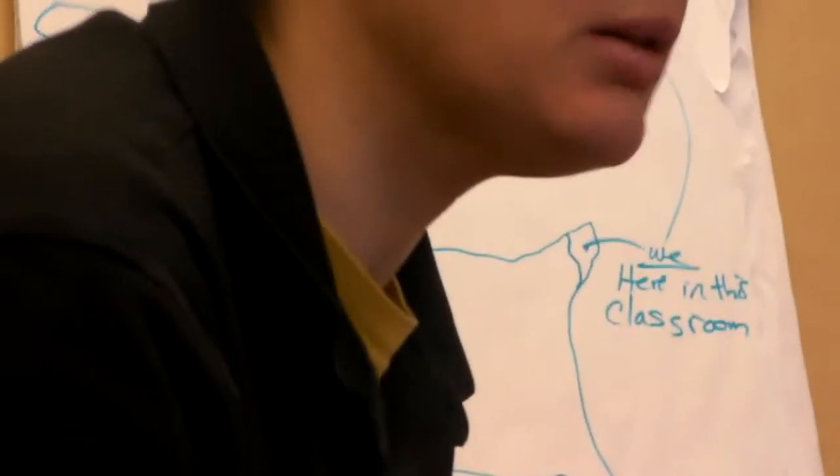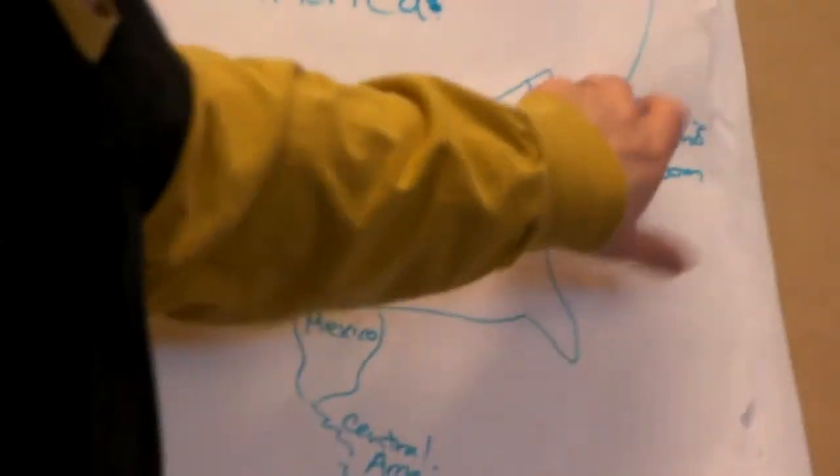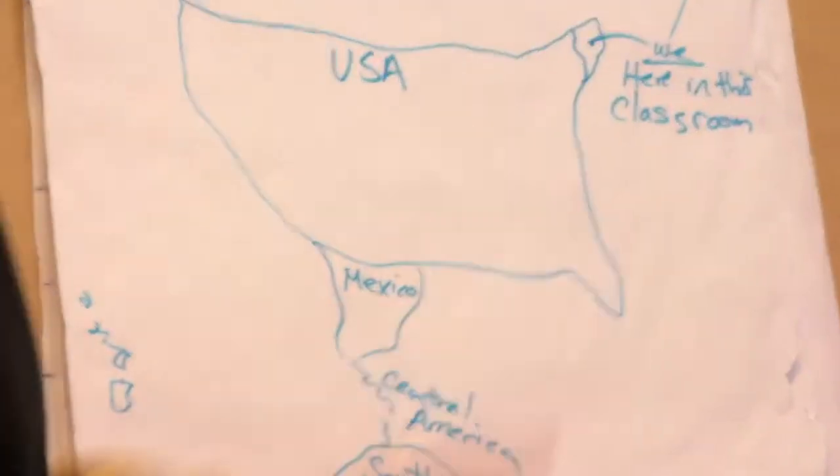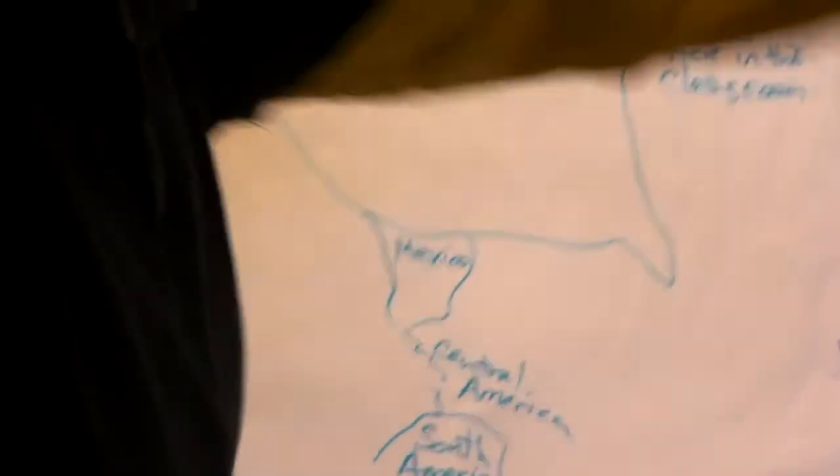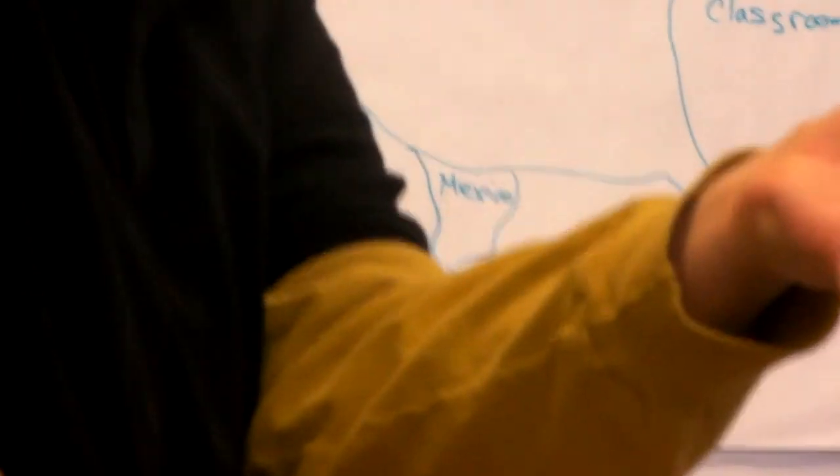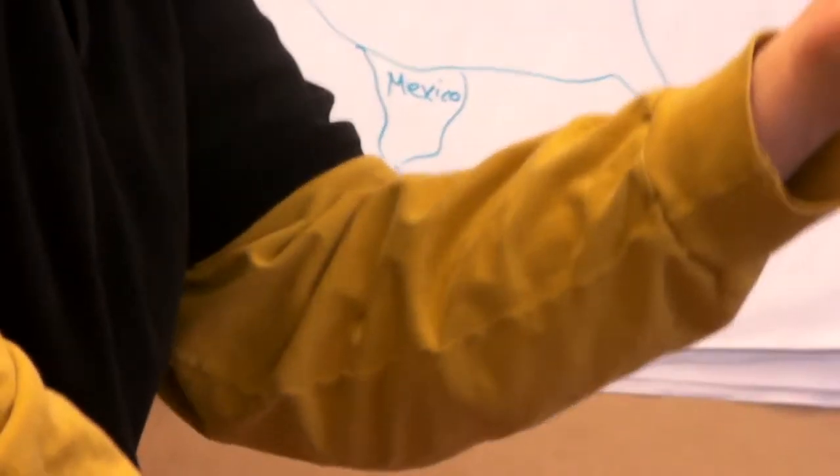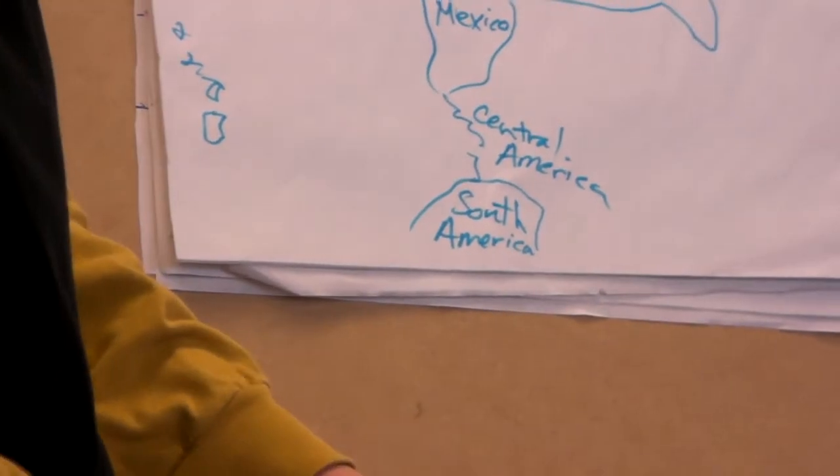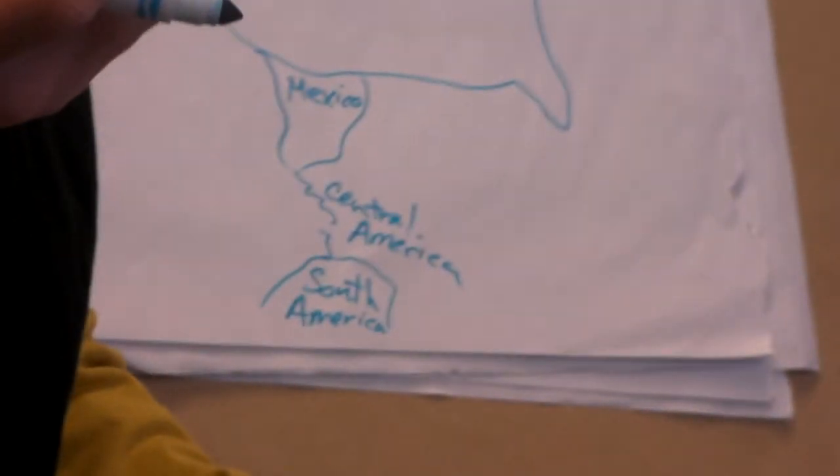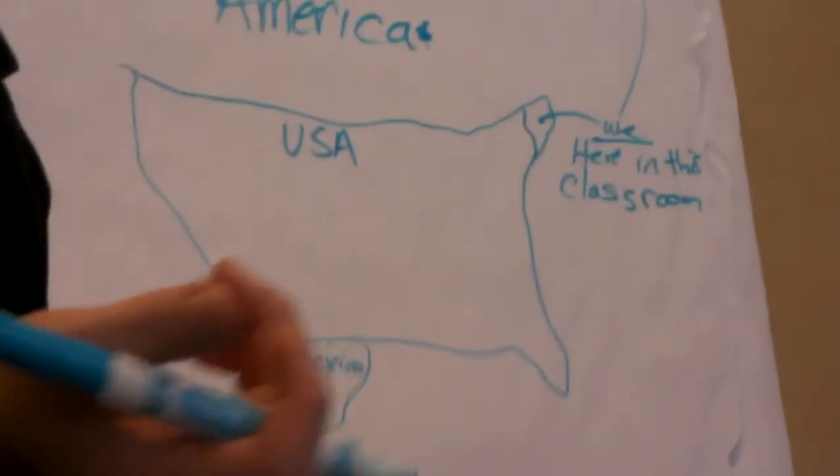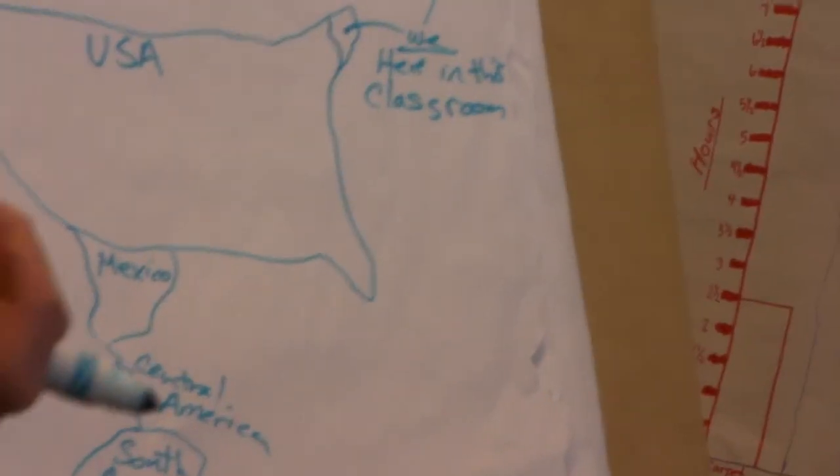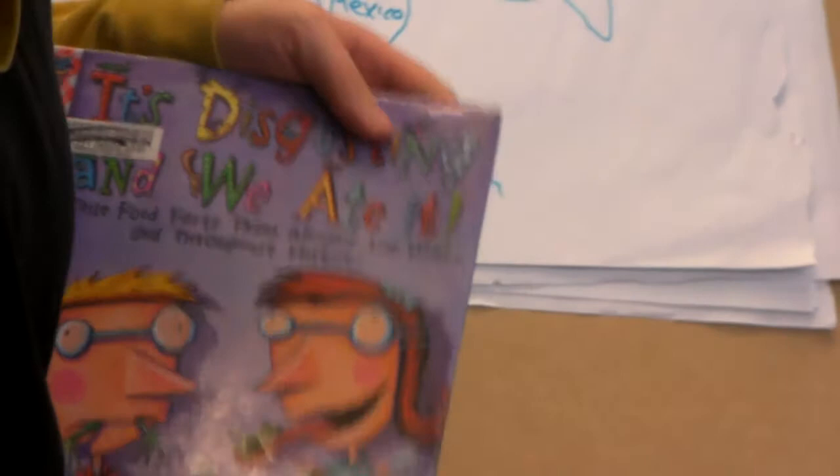Do you think everybody in all fifty states eats the same thing as you do in this classroom today? But they don't live in different countries. Are they still the other people? They're not you. Right? So they'd still be other people. So, what can we say? They're not people from different countries. So, who are they? Who are they if they're not eating the same foods as you are? Some of them are eating the same foods, of course. Okay? But, what are they?